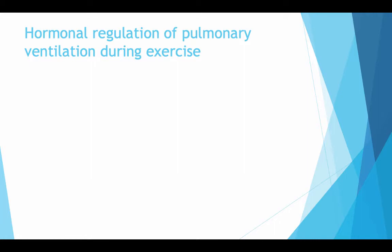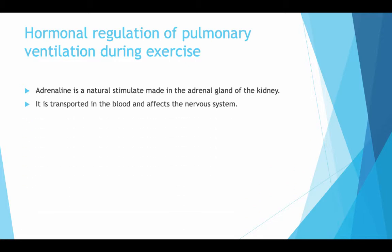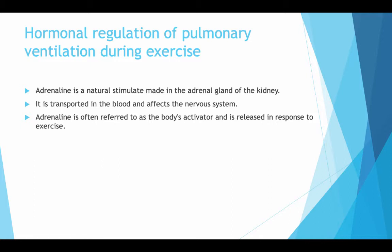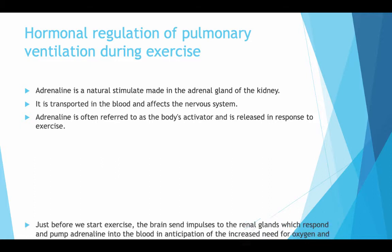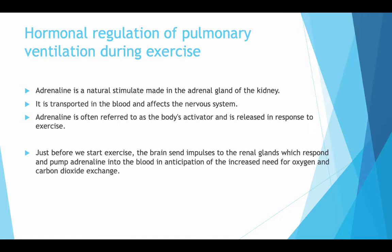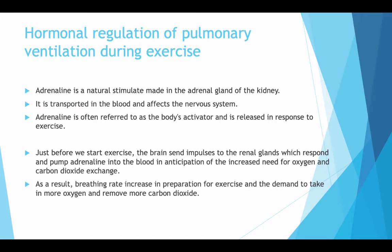Hormonal regulation of pulmonary ventilation during exercise: adrenaline is a natural stimulant made in the adrenal gland of the kidney. It is transported in the blood and affects the nervous system. Adrenaline is often referred to as the body's activator and is released in response to exercise. Just before exercise begins, the brain sends impulses to the adrenal glands, which respond by pumping adrenaline into the blood in anticipation of an increased need for oxygen and carbon dioxide exchange. As a result, breathing rate increases in preparation for exercise and the demand to take in more oxygen and remove carbon dioxide.